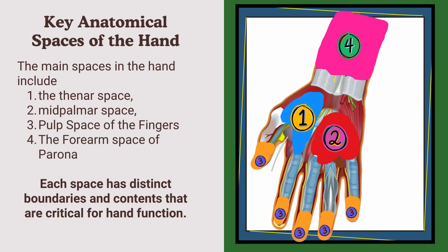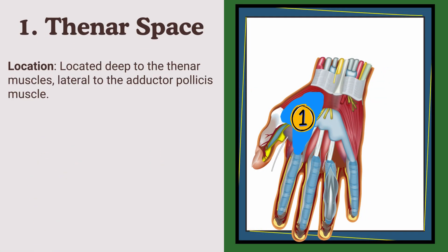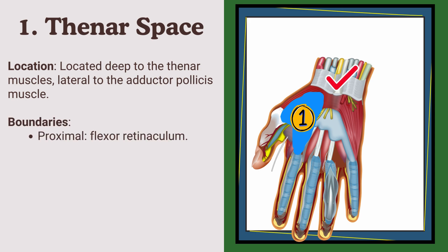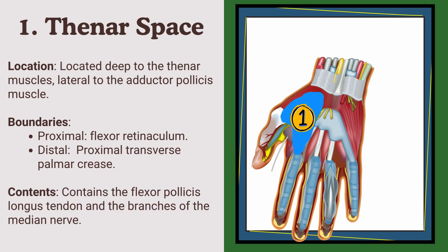Number one: the thenar space. Location: it is located deep to the thenar muscles, lateral to the adductor pollicis muscle. Boundaries: proximally it begins from the distal end of the flexor retinaculum, distally it ends at the proximal transverse palmar crease. Contents: it contains the flexor pollicis longus tendon and the branches of the median nerve.